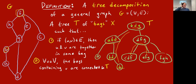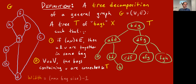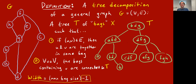Every graph can have a tree decomposition — for example, you can just put every single vertex into one bag and your whole tree is just one vertex with no edges, one big bag with all the vertices. That's allowed, but you're trying not to do that. The width of a tree decomposition is basically the maximum bag size, minus one — I'll explain why in a second.